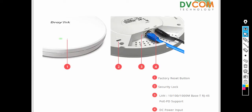Let's see what interfaces are available. There is a reset button on top of this access point. If you forget the password or encounter issues, use a paper clip and hold for 15 seconds to reset the device. There is also a LAN port that supports PoE by default, so you can connect it to a PoE switch or use DC power. This port supports 10, 100, and 1000 Mbps and uses an RJ45 connector.